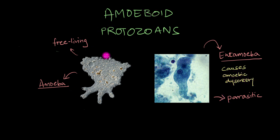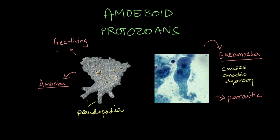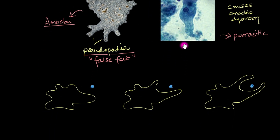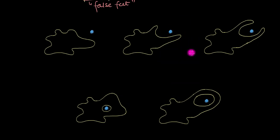You can identify these protozoans quite easily by the unique way they move, or rather by the way they crawl. Amoeboid protozoans can form something called pseudopodia, which are these temporary protrusions or extensions that arise from their cell surface. Pseudopodia, which roughly translates to false feet — pseudo meaning false and podia meaning feet — allow amoeboid protozoans to walk and capture food. Amoebas don't have mouths or mouth-like structures. Instead, they take in food through the process of phagocytosis through anywhere on the cell surface.